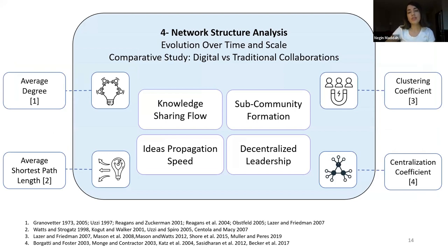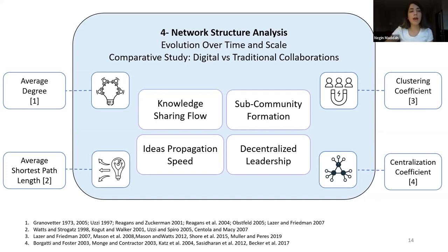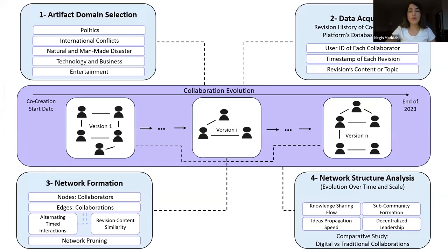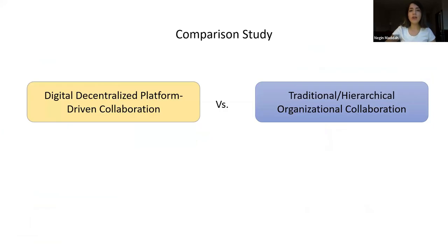We analyze the network structures in four dimensions: first, knowledge-sharing flow, captured by average degree; second, idea propagation speed, captured by average shortest path length; third, sub-community formation, captured by clustering coefficient; and fourth, decentralized leadership, captured by centralization coefficient.